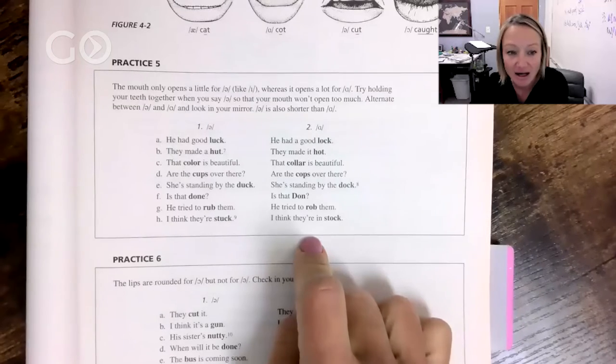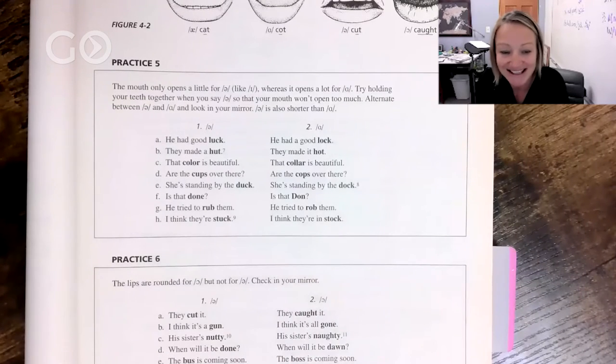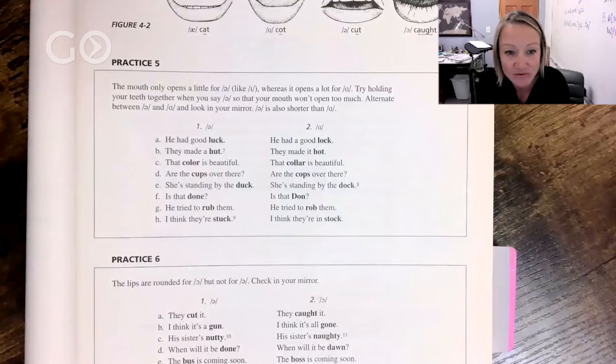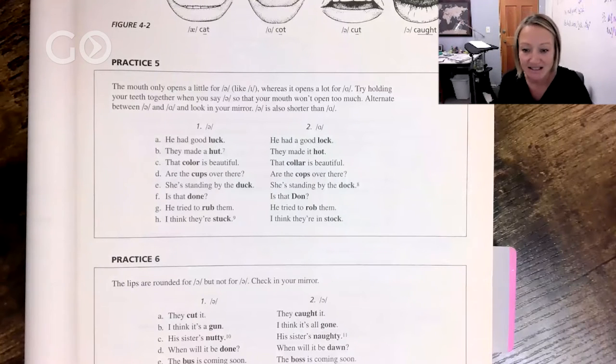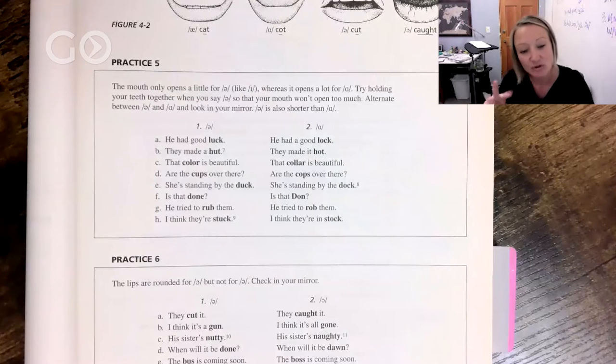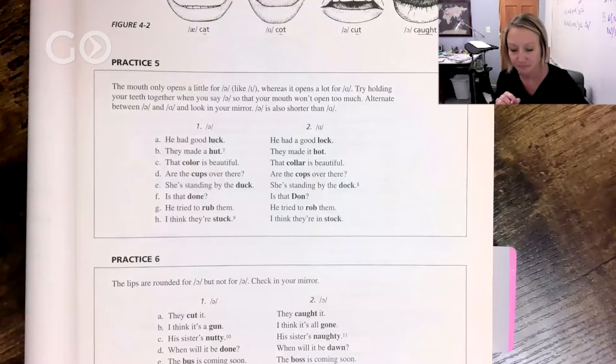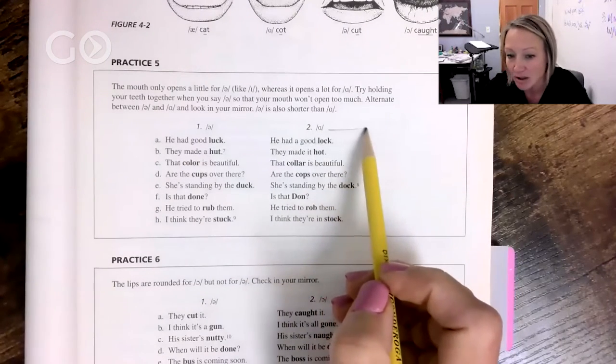All of these are going to have this uh sound. All of these are going to have the ah sound. Let's do the first one together: he had good luck, he had a good lock. If you have questions about those, write down those questions. They made a hut, they made it hot. So when you compare those you can really feel the difference.